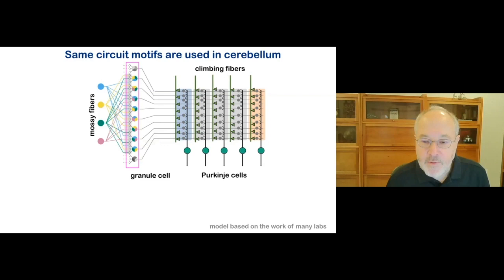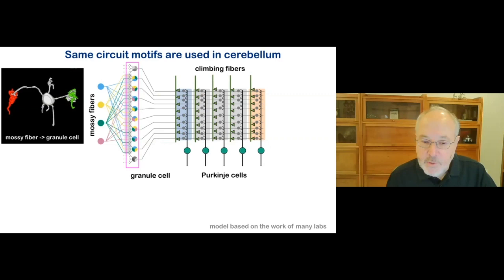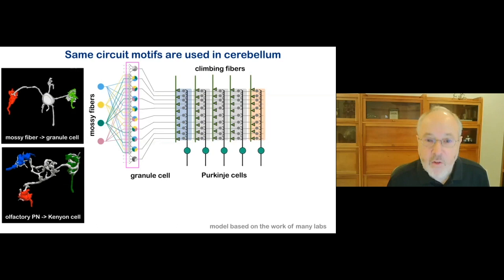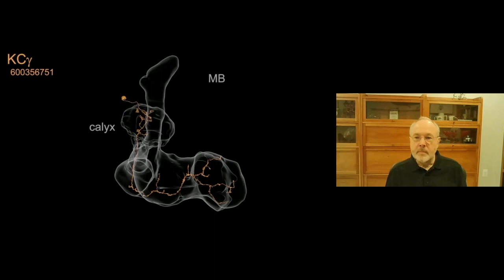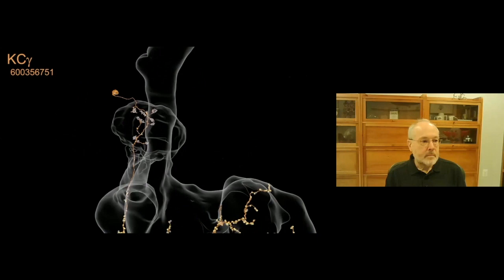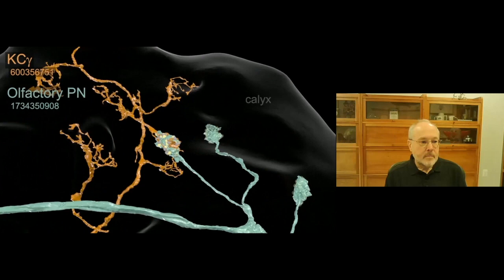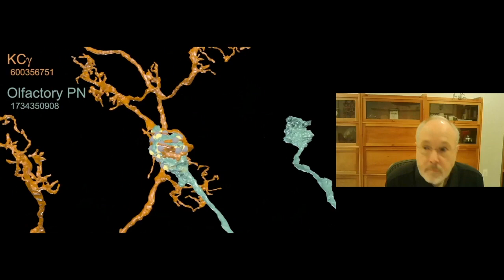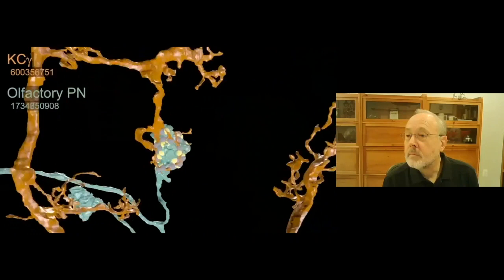The climbing fibers and the Purkinje cells define zones along the granule cells, analogous to the mushroom body compartments. The synapses between the mossy fibers and the granule cells have a distinct morphology with claw-like dendrites surrounding the input axon. A very similar morphology is seen in the olfactory inputs to the Kenyon cells, which I can show you in the movie, which instead of a cartoon is actually a 3D reconstructed neuron from the hemibrain data set. We're going to show you a single Kenyon cell. A single gamma Kenyon cell with its dendrites in the main calyx and its output synapses in the gamma lobe is shown.